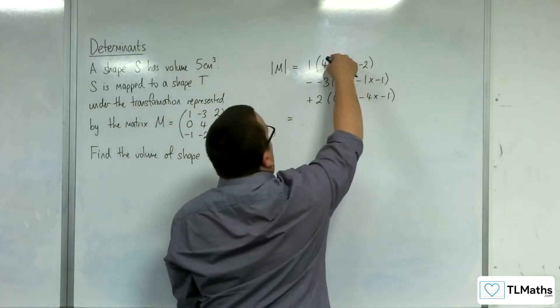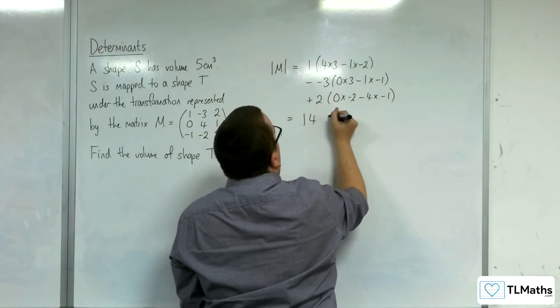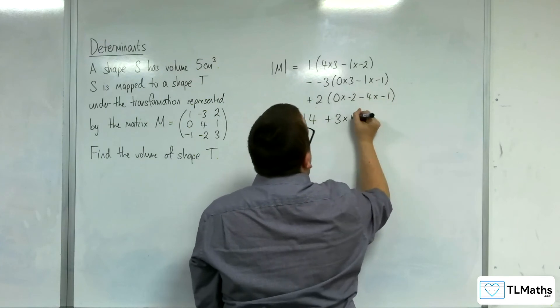Right, what have we got? So we've got 12 plus 2, so 14. Then plus 3 lots of, well, 0 and lots of 1.